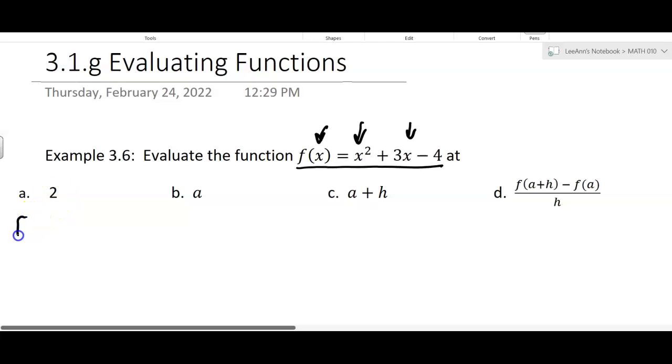So what we're trying to find is f of 2. f of 2 is going to equal 2 squared plus 3 times 2 minus 4. The 2 that you put in for the x, and then the 2 for the x, and then the 2 for the x. So there are like 3 x's in this equation, and all of them are getting replaced with 2.